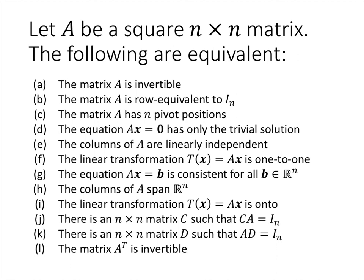Here's the full theorem one more time. The way we're going to use this is however we need to in any given situation. If we're focusing on linear transformations, we might use F or I to talk about whether the transformation is one-to-one or onto, and that tells us the corresponding matrix is invertible. If we're row reducing and find n pivot positions, that determines that the matrix is invertible. Or if we already know the matrix is invertible, we know all of the rest of these facts.